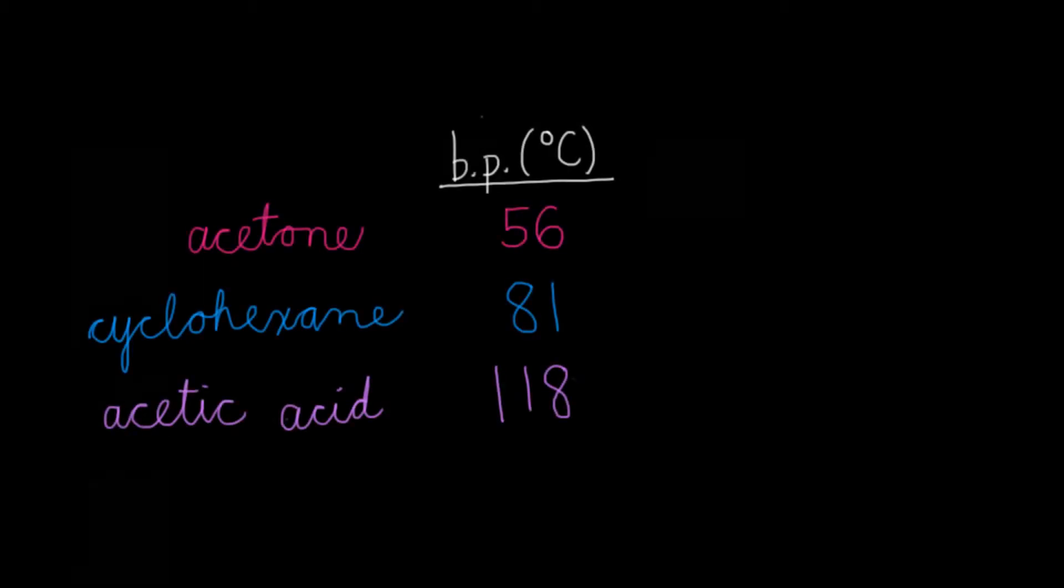What happens if instead you have a three-component mixture? Well, this works pretty much the same as a two-component mixture, except that you'll see more plateaus in your graph of temperature versus time, which I'll draw here on the side. The first compound that we have here is acetone, which looks like this. The next one is cyclohexane, which has a slightly higher boiling point. And lastly, you have acetic acid.